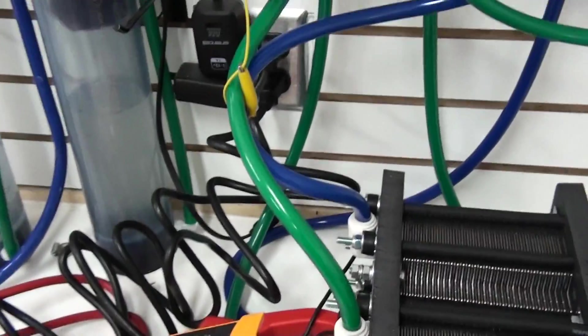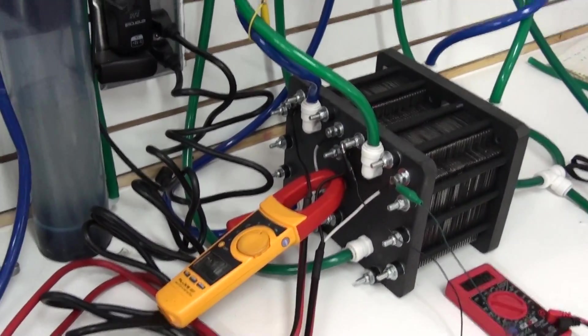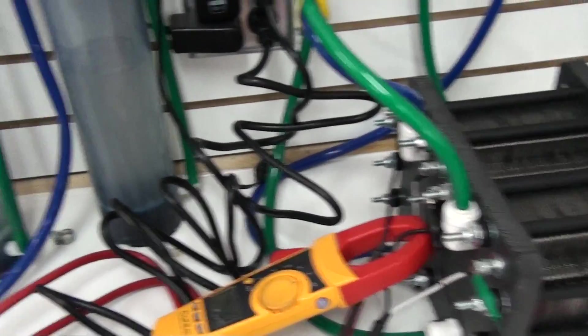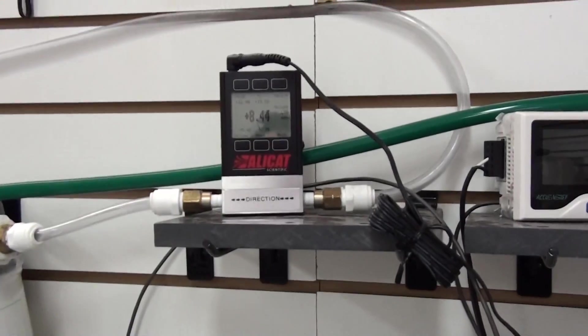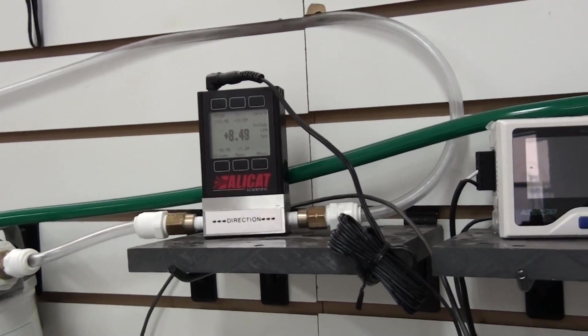See the temperature there? Hasn't been running for very long. This here will give you some idea of what this cell will do. As the temperature goes up, we'll be able to draw more current and more amps, and we'll get more liters per minute.